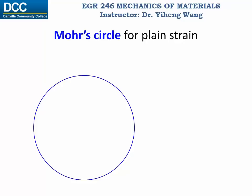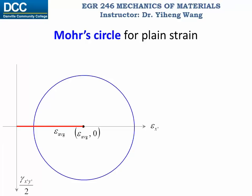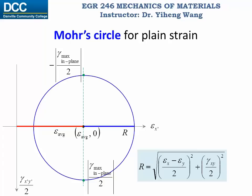Mohr's circle can be used for plane strain transformation as well. In this case, the horizontal axis represents the normal strain along the x prime direction. The vertical downward axis represents the shear strain gamma x prime y prime over 2. The center of the circle is at the average normal strain. The radius of the circle is given by an equation which equals the absolute value of half of the maximum in-plane shear strain. The two intercepts represent the principal strains — maximum and minimum — and an arbitrary point on the circle represents the normal strain and half of the shear strain for an arbitrary orientation.